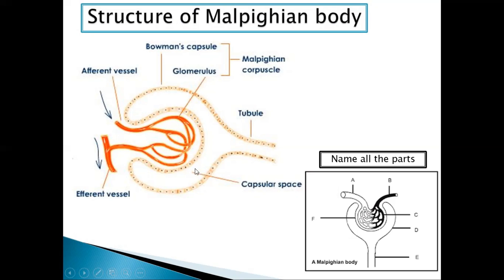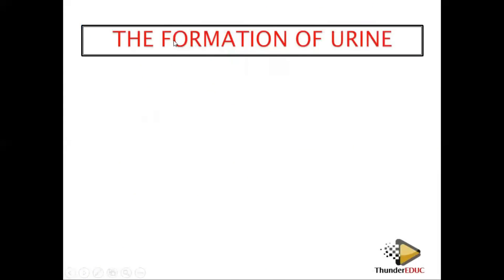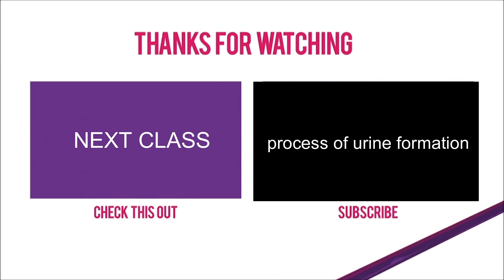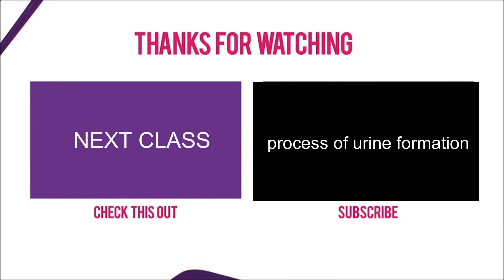The capsular space is the space of the Bowman's capsule. After filtration, substances pass through the podocytes — the cells lining the capsule — which allow substances to pass through into the capsular space. You need to know how to name and label this structure. Next time we will look at the formation of urine in the body.